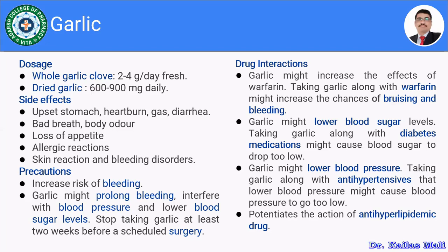Precautions to consider: in bleeding disorders, garlic should not be given because it increases the risk of bleeding. Garlic prolongs bleeding and can interfere with blood pressure regulation and lower blood sugar levels. Therefore, before scheduled surgery, one should not take garlic or garlic-related products.